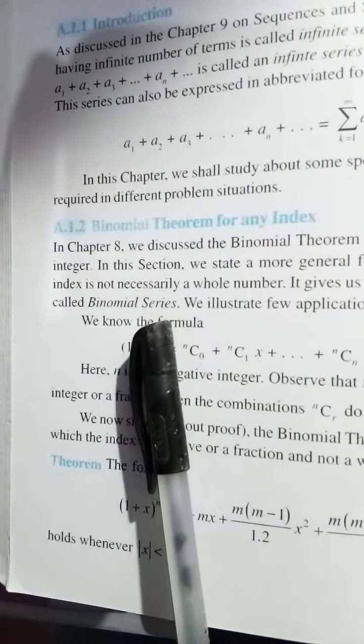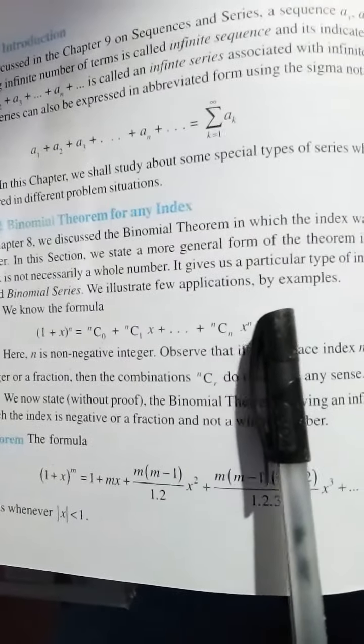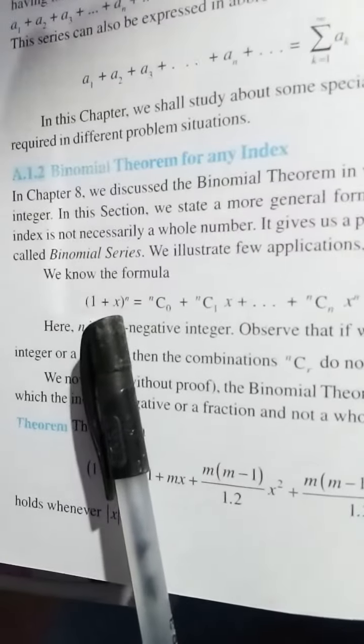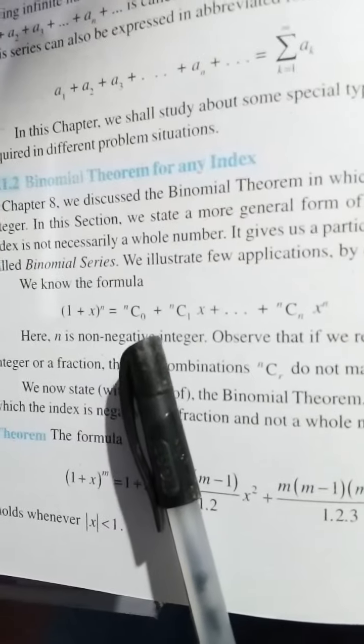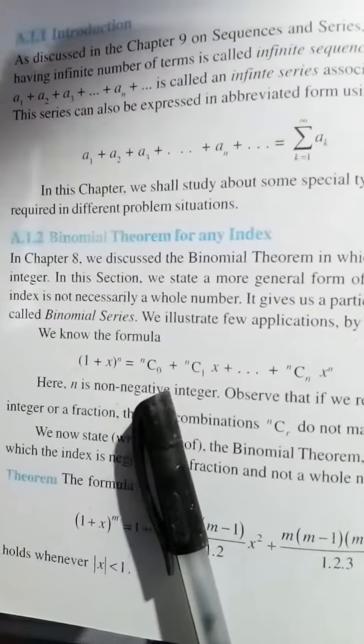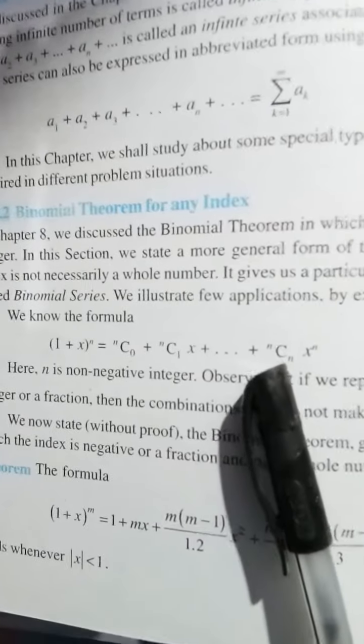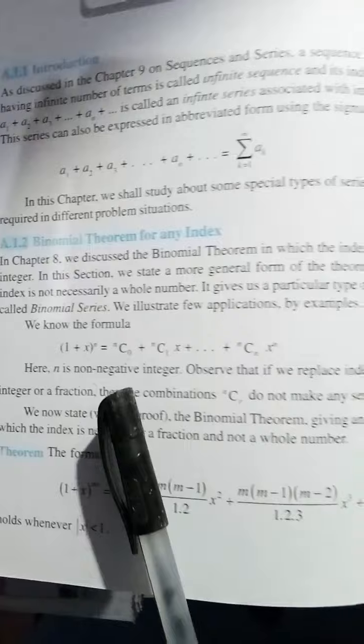This is called the binomial series. We illustrate a few applications with examples. We know the formula (1 + x)^n is equal to nC0 + nC1*x + ... + nCn*x^n, where n is a non-negative integer.